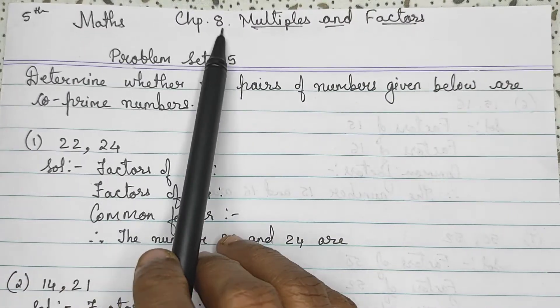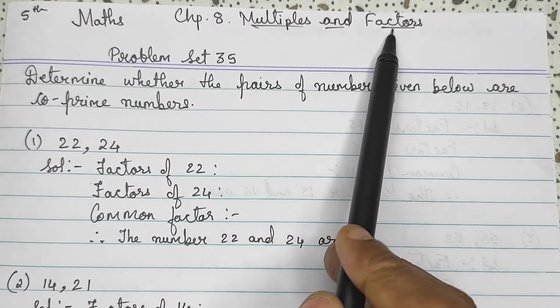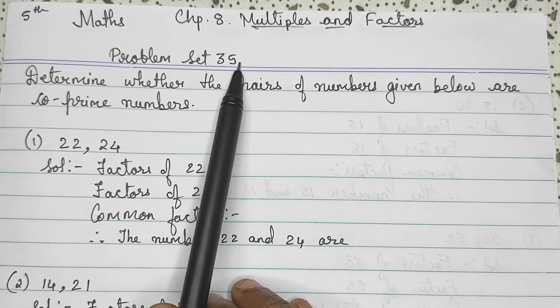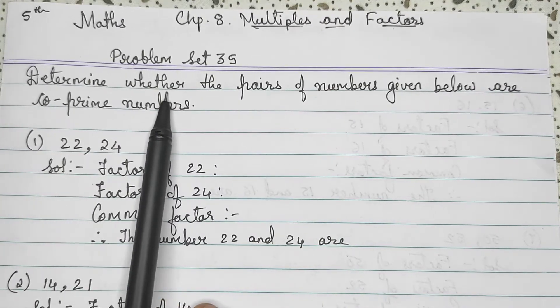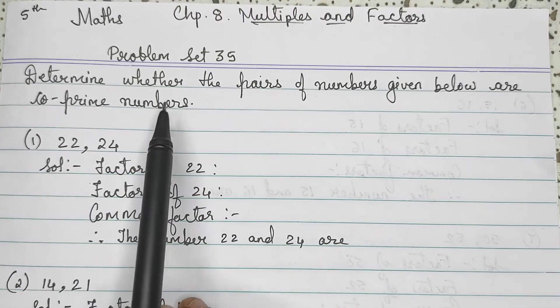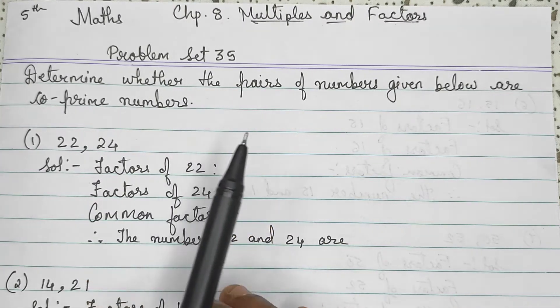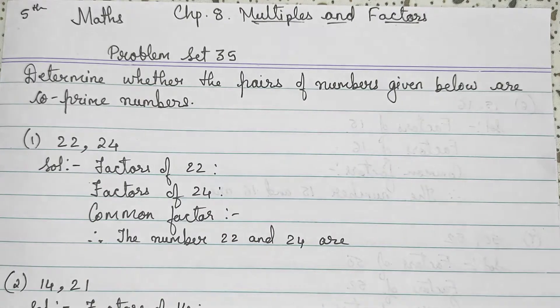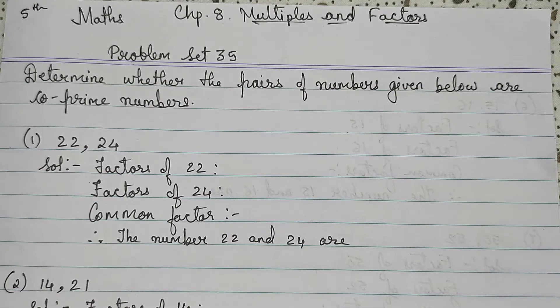Standard 5th Maths, Chapter 8, Multiples and Factors, Problem Set 35. Determine whether the pairs of numbers given below are co-prime numbers. Now, before we solve these sums, let us understand what is co-prime number.